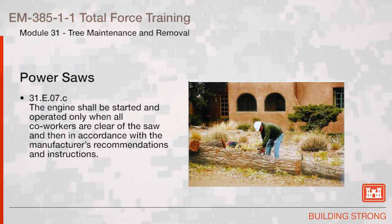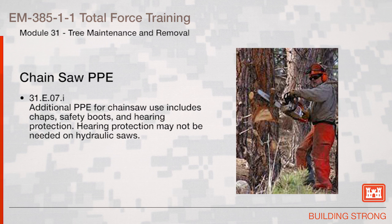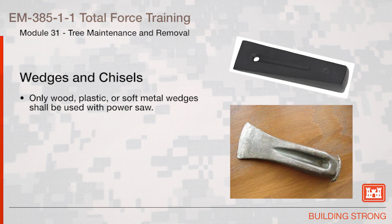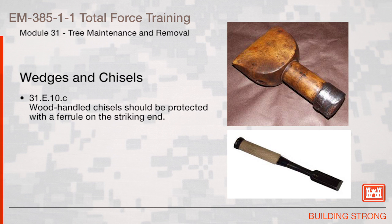Power saws: The engine shall be started and operated only when all co-workers are clear of the saw, and then in accordance with the manufacturer's recommendations and instructions. Chainsaw personal protective equipment: Additional PPE for chainsaw use includes chaps, safety boots, and hearing protection. Hearing protection may not be needed on hydraulic saws. All edge tools and blades shall be properly sheathed when not in use. Wedges and chisels: Only wood, plastic, or soft metal wedges shall be used with power saws. Wood-handled chisels should be protected with a ferrule on the striking end.